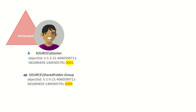Derek is also a member of a group, and that group also has a unique identifier or SID. You can see here that the first part of the string is the same because these objects are in the same domain, and then towards the end of the string they differ.